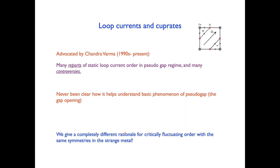The operators that overlap with the current must have the same symmetries as the current under G_UV — they must be odd under time-reversal and inversion, have zero crystal momentum, and transform as a vector under lattice rotations. These are precisely the same symmetries as the famous loop current order proposed by Chandra Varma over the past 20-plus years.